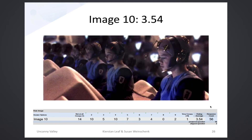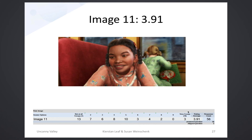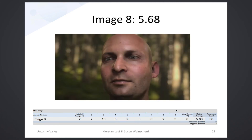Image mh10 scored 3.54, with 14 people rating it not creepy and the 4s getting fairly high as well. Image 11 came in at 3.91 — the images are really starting to get creepier, as shown by the heavier higher ratings. Image mh12 scored 4.8, very spread across the board, and finally our creepiest image scored 5.68, with very few people rating it not creepy at all and ratings heavily concentrated at 3 and above.